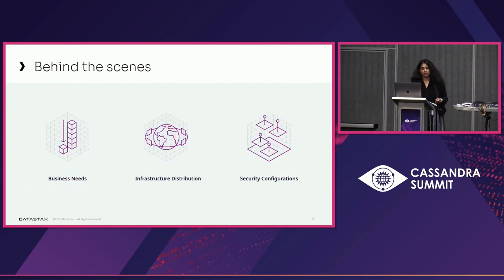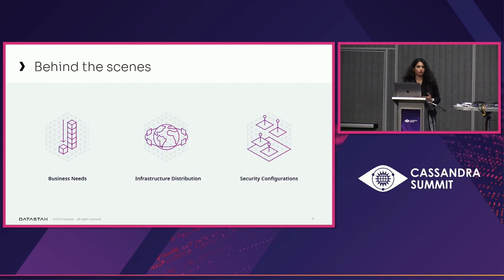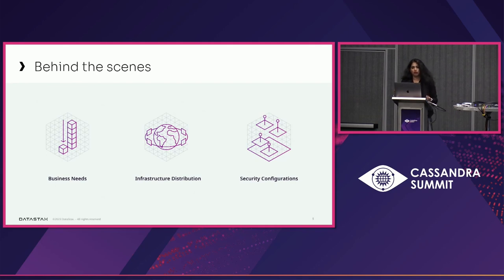Let's distill it even further. Behind the scenes, the teams go back and figure out what is the business need we are trying to solve and what distribution of infrastructure is needed for this particular use case. Is it three geos, five geos? Do we need real-time replication across all key spaces or just one? Localization rules, data residency rules — everything kicks in. And then of course the security configurations — what would be the ideal security configuration that meets the needs of the business as well as the security posture of the organization. The goal is not to short-circuit these conversations but to come up with a structured approach so that the time to resolution is lesser and lesser as we get more mature.